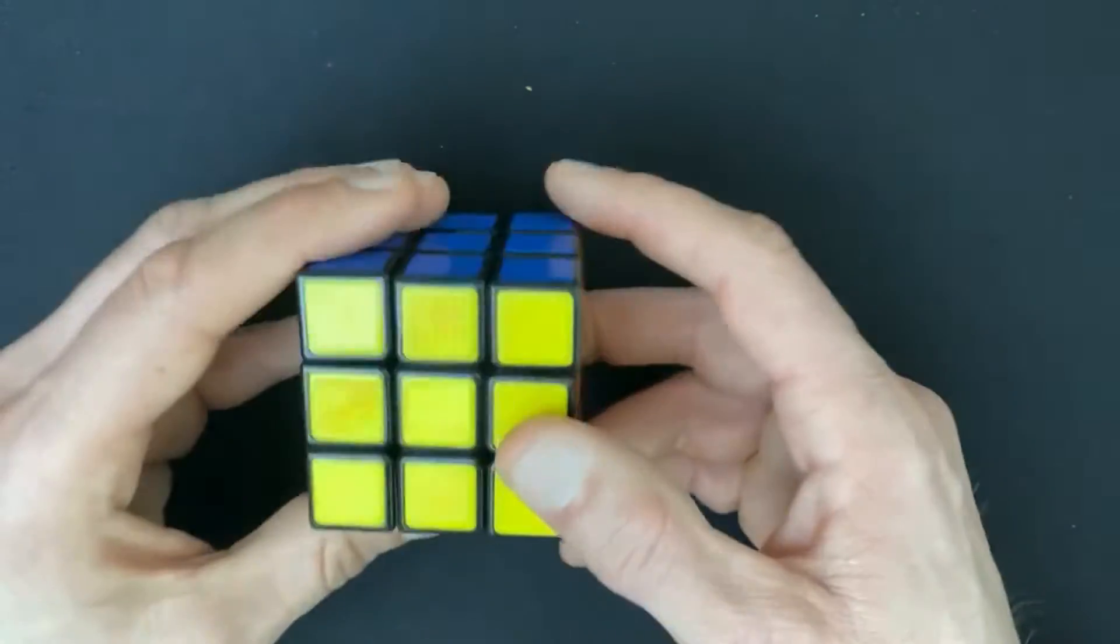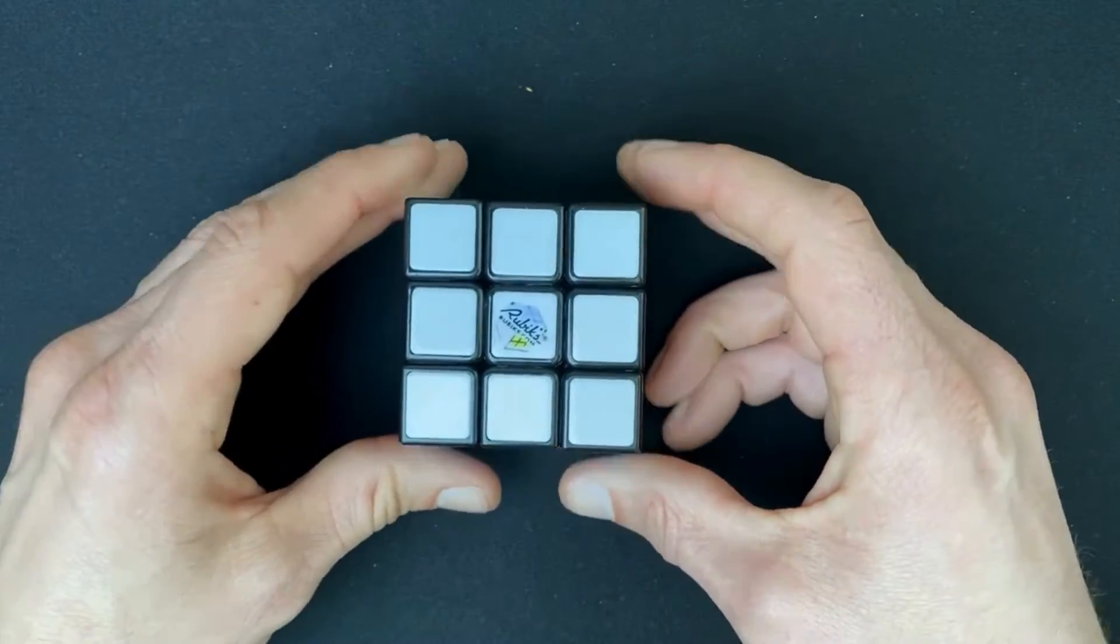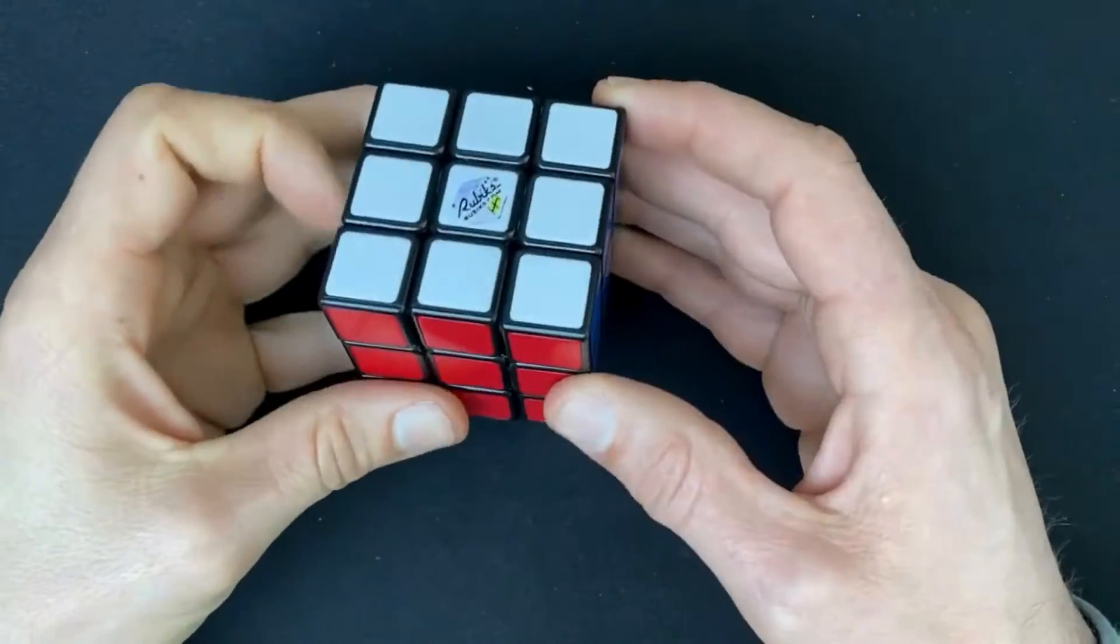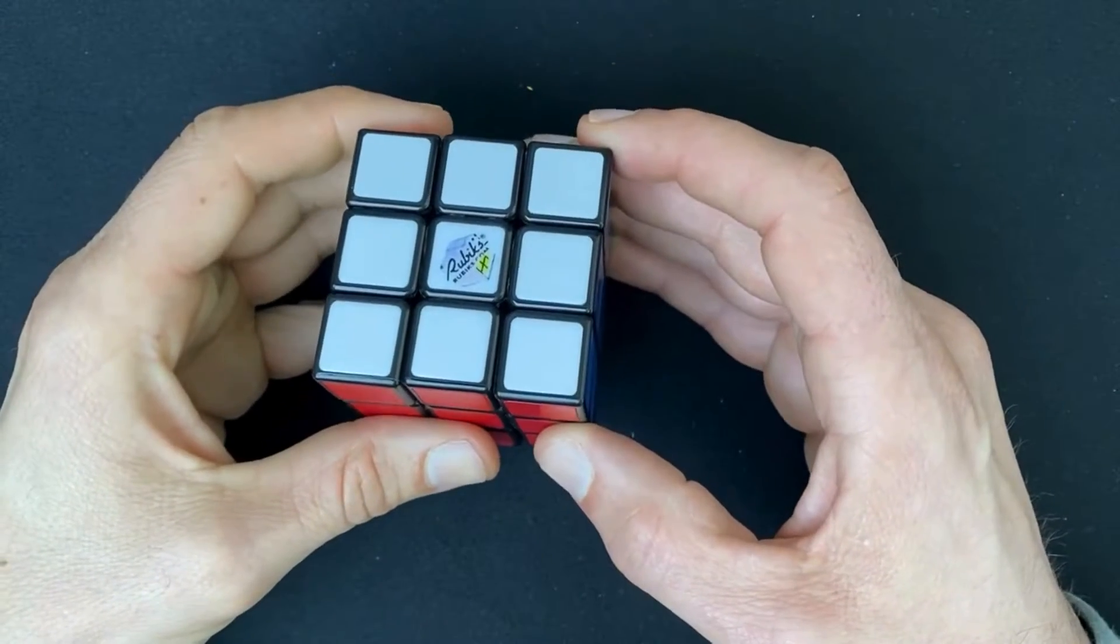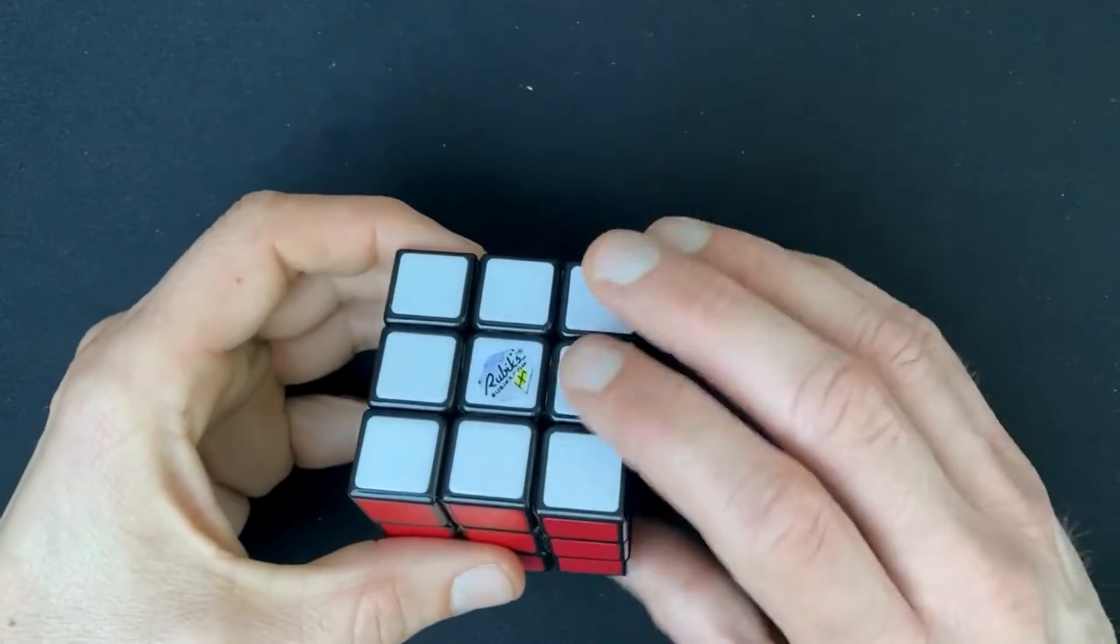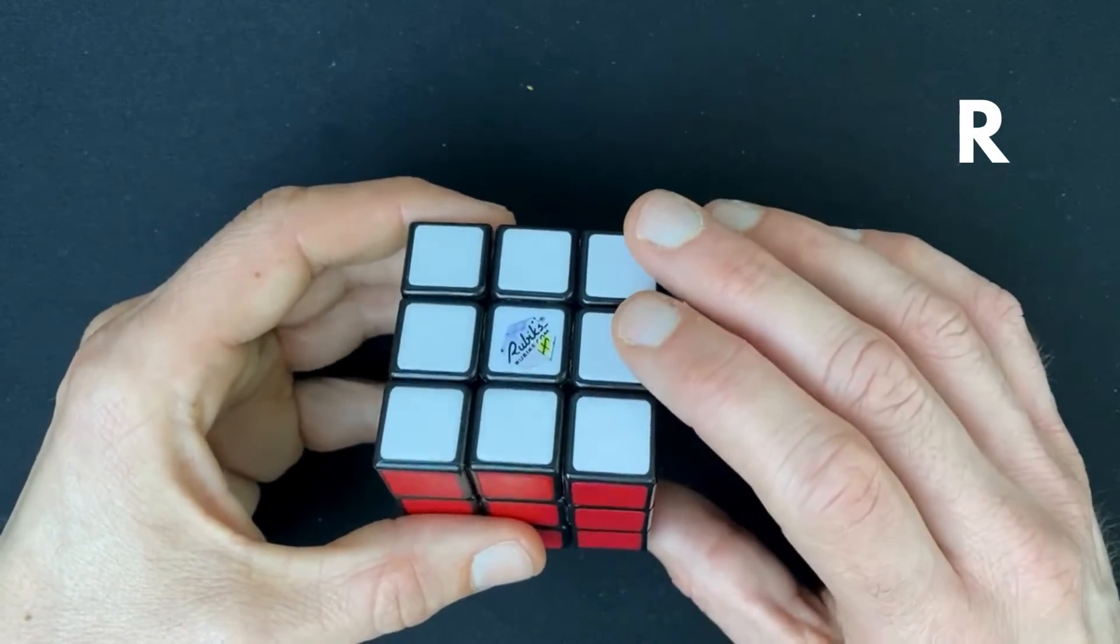So let me explain the most common rotations of the cube. So the first rotation is the right layer, so the right hand side of the cube. It's indicated with an R, and a rotation always goes clockwise.